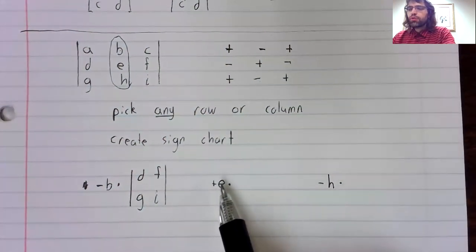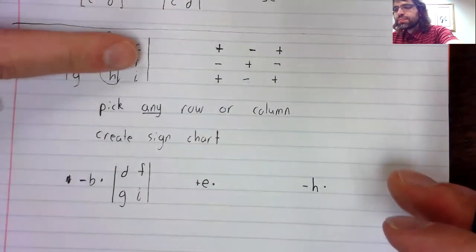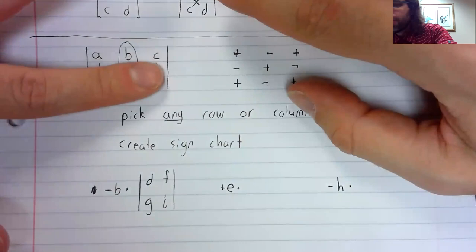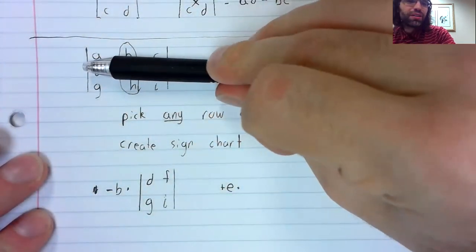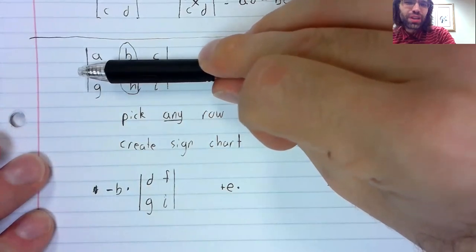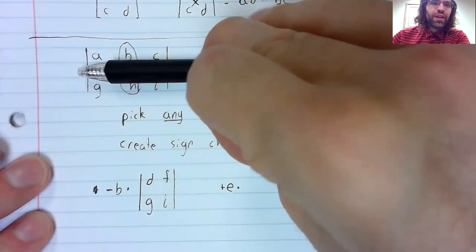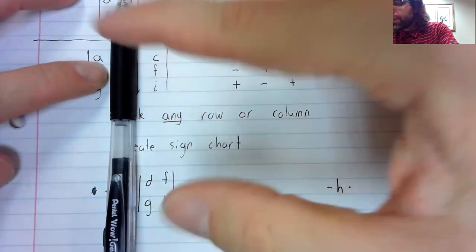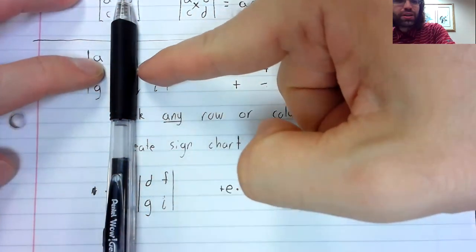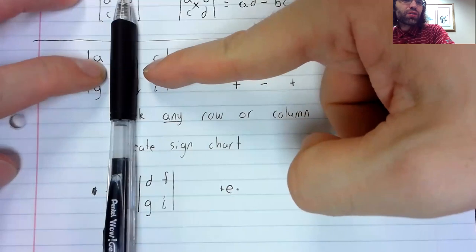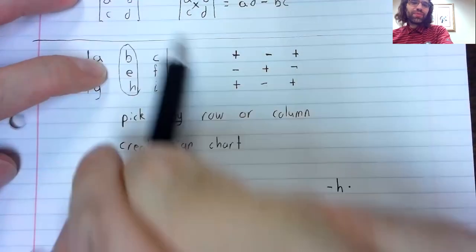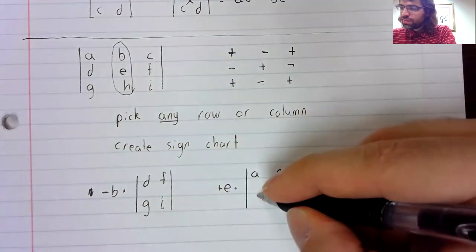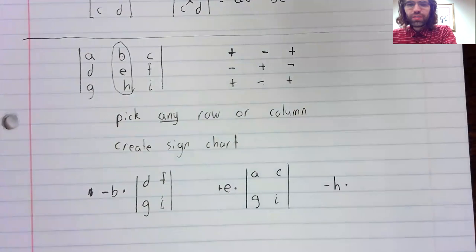And now over here, we'll repeat that. We'll cover up the row that contains e and the column that contains e. And the numbers that remain, if we cover both these up, are a, c, g, i. And we're going to take the determinant of that matrix.